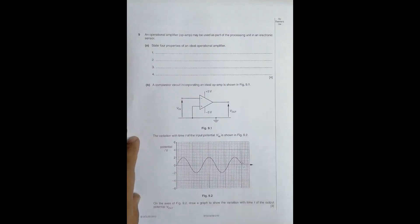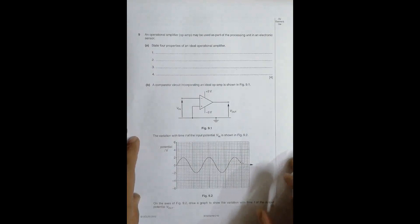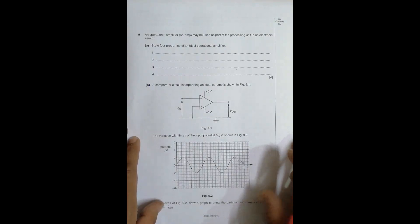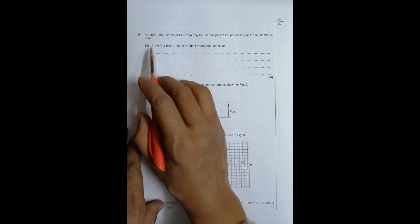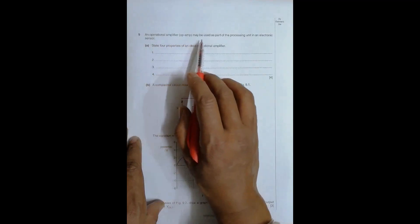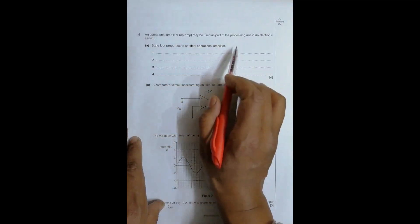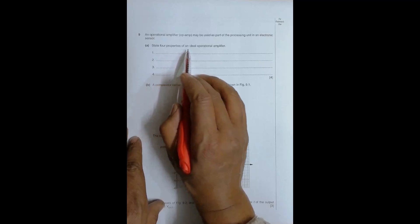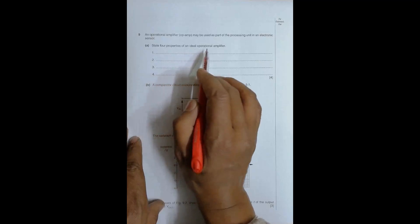Hello dear folks. Today it is the 2012 paper, question number nine, concerned with the chapter on electronics. The question says: an operational amplifier, op-amp, may be used as part of the processing unit in an electronic sensor. State four properties of an ideal operational amplifier.